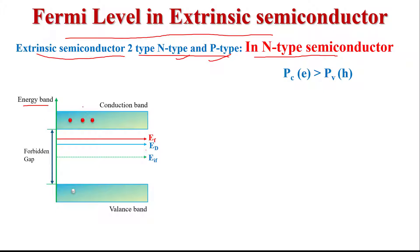In the energy band diagram of N-type semiconductor material, a donor energy level also exists near the conduction band. We know that in N-type semiconductor material, conduction is mainly due to the majority carrier — electron. Because in N-type semiconductor material, the majority carrier is electron, meaning it has a large number of electrons and conduction is mainly due to the electrons. So the probability of electrons in the conduction band is larger than the probability of holes in the valence band.